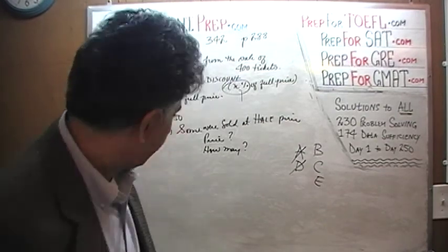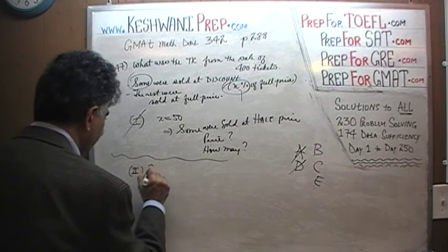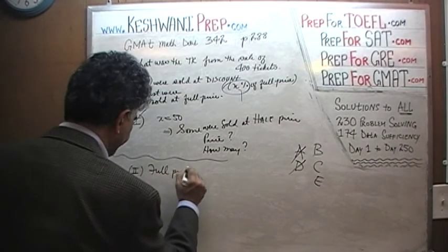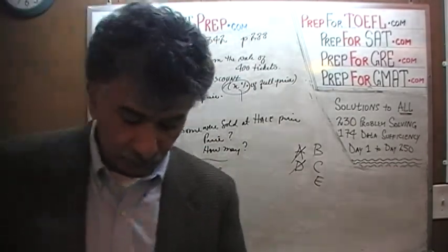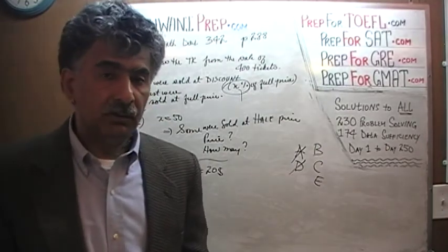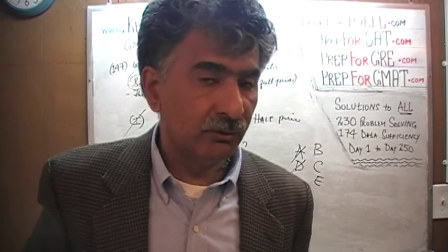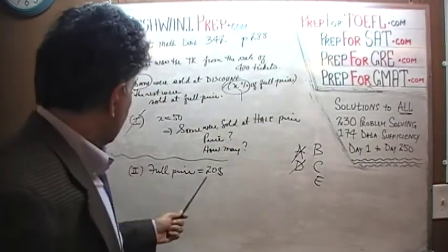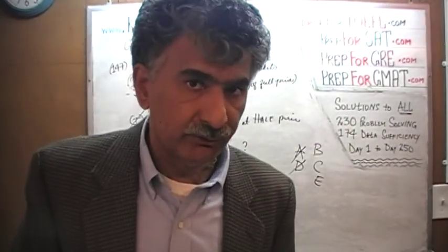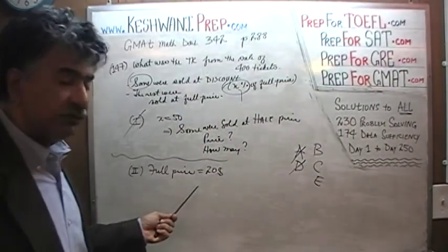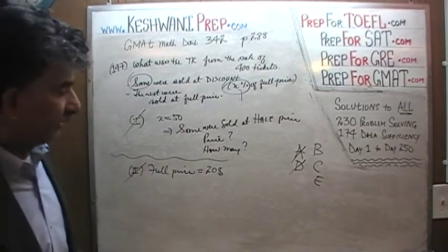Let's look at the second statement. In the second statement, they go on to tell us that the full price is $20. Again, simply knowing that the full price is $20 and nothing else does not enable us to figure out what the total revenue would be from the sale of 400 tickets. All we know is that some of them were sold at $20, some were sold for less than $20 at some discount. We do not know what the discount is and we do not know how many tickets there are. The second statement by itself is also not enough. That tells us the answer cannot be B.